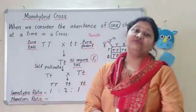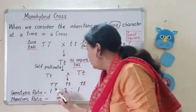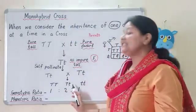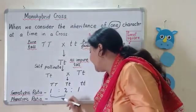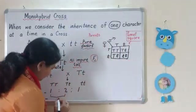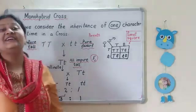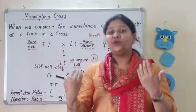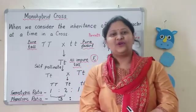Now we need to see the phenotypic ratio — that is, what the plant looks like externally. Capital T capital T will appear tall externally. Capital T small t will also appear tall externally. So we combine these two in the phenotypic ratio. The phenotypic ratio becomes 3 is to 1 — three tall and one dwarf. So the monohybrid cross gives us a phenotypic ratio of 3 tall to 1 dwarf.